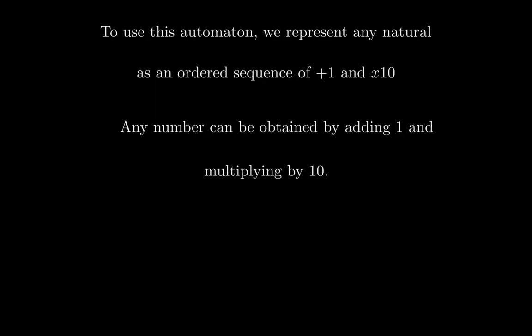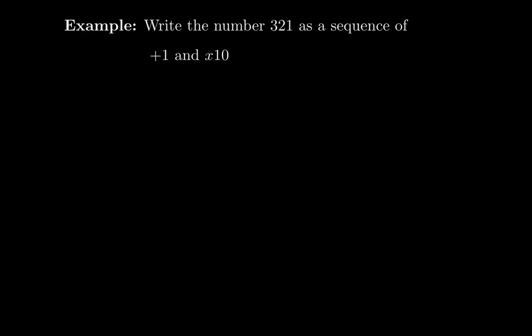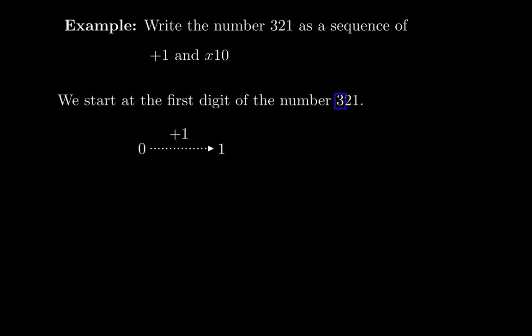We always need to do this before using the automaton to check for divisibility by 3. Let's write the number 321 as a sequence of plus 1 and times 10. We start with the first digit, which is 3, going from left to right. Starting from 0, we add 1 to get 1, add 1 to get 2, add 1 again to get 3.